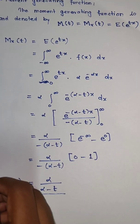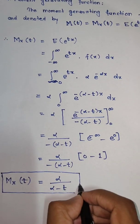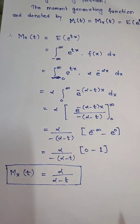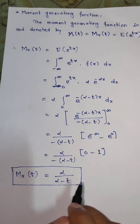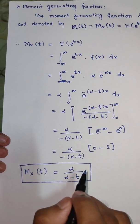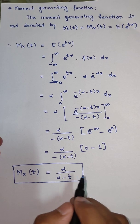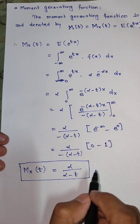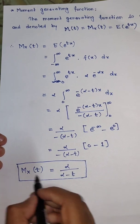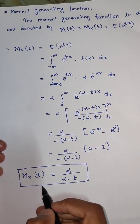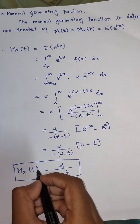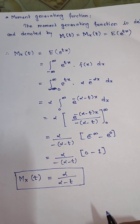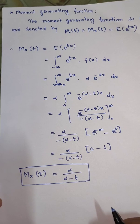So in this learning video, we have seen the definition and the four properties of exponential distribution: namely mean, variance, standard deviation, and moment generating function. I hope this video lecture is making sense. Thank you for watching this learning video. Happy learning.